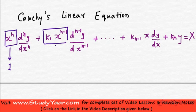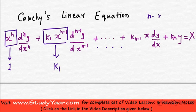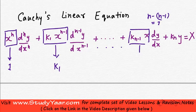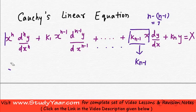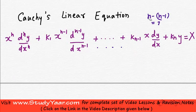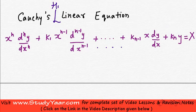Up until now the coefficient was equal to k1, and so on with terms like these. So you have k(n-1) times x raised to power 1, dy/dx, plus k(n) times y equal to x. So what we are seeing is we have additional powers of x being multiplied with your differential coefficient. We are going to see how to solve an equation of this type, known as Cauchy's homogeneous linear differential equation. So let's solve this.